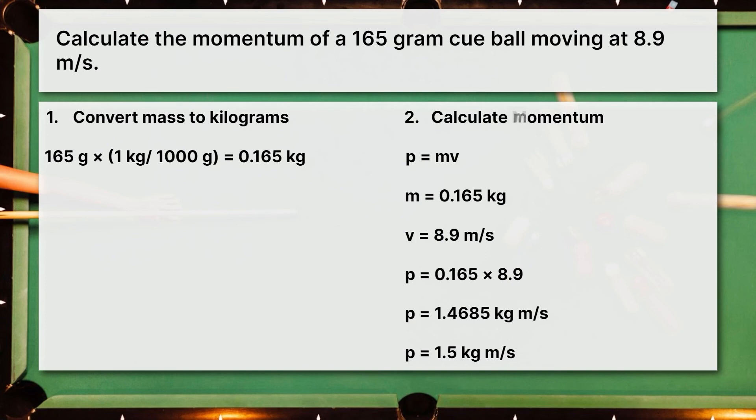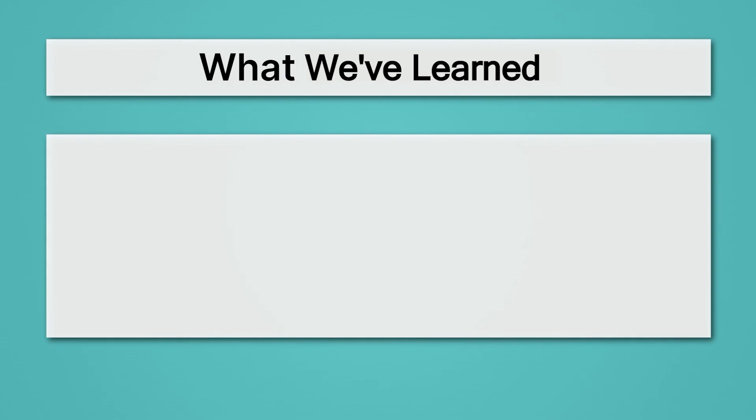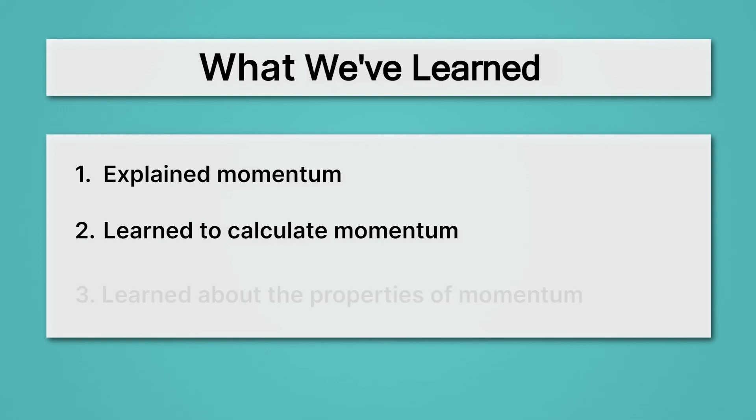Let's review what we've learned. First, we explained momentum. We came to understand that momentum is the tendency of an object to stay in motion. Then we learned to calculate momentum, where we saw if we multiply mass in kilograms times velocity in meters per second, we actually get momentum. And lastly, we learned about the properties of momentum, namely that it's a vector and that momentum is conserved.